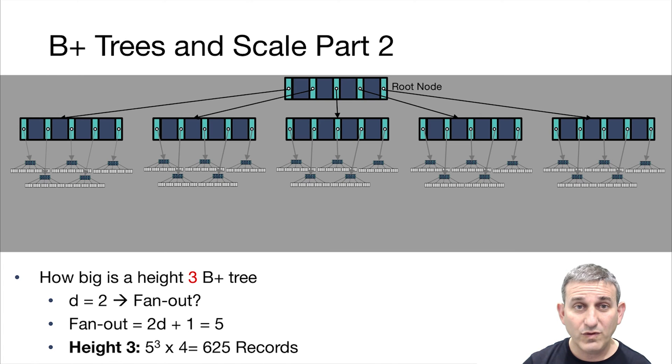Now let's look at a height 3 B-plus tree with the same order. So it's order 2. But now with height 3, we've got a root node with 5 fanout. The layer below it has nodes with fanout 5. The layer below that has nodes with fanout 5. So we have 5 cubed fanout in the interior nodes. And at the leaves, we have 4 records per leaf. So that's 5 cubed times 4 is 625 records. So that gives you a sense that things are scaling quite nicely.